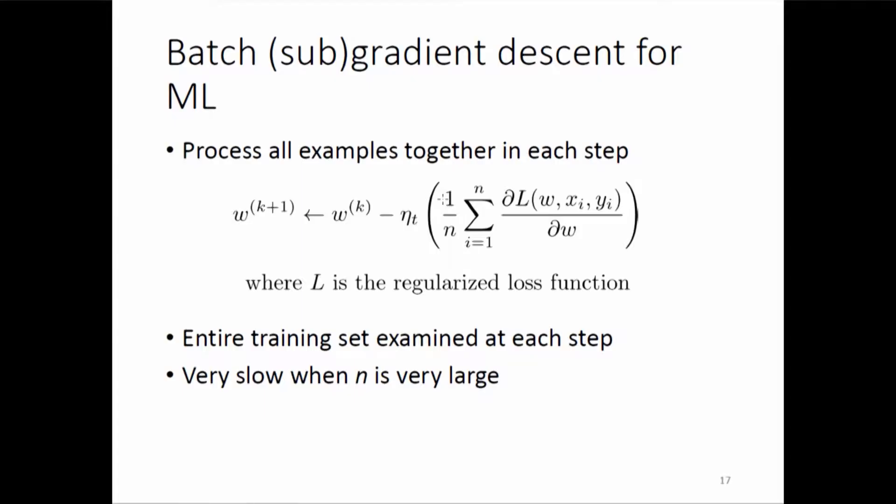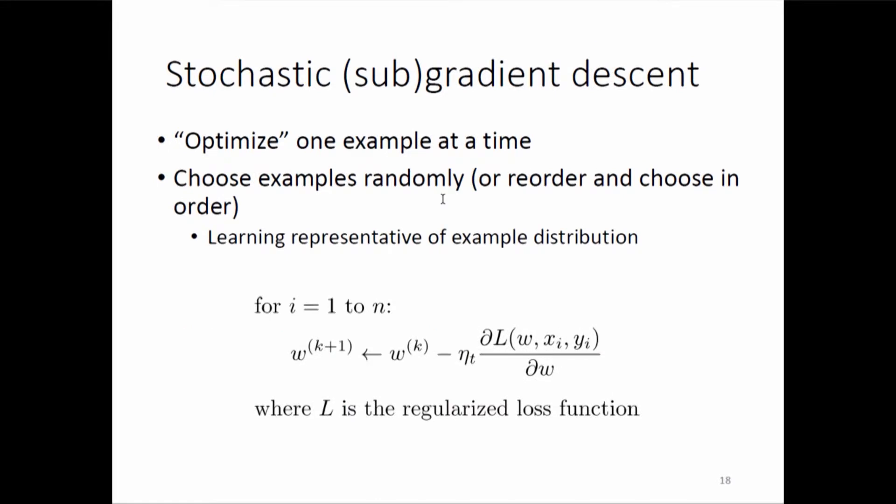That is the idea behind stochastic gradient descent. Has SGD been covered already? OK. Gradient descent computes the full gradient; stochastic gradient descent gets rid of the summation over all n examples.